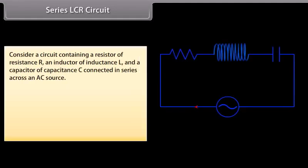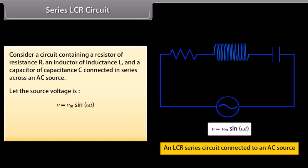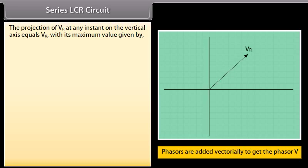Series LCR circuit: Consider a circuit containing a resistor of resistance R, an inductor of inductance L, and a capacitor of capacitance C connected in series across an AC source. Let the source voltage be equal to Vm sin(ωt). We apply Kirchhoff's rule in the loop to get V = Vr + Vl + Vc. The projection of Vr at any instant on the vertical axis equals Vr, with its maximum value given by the product of Im and R.